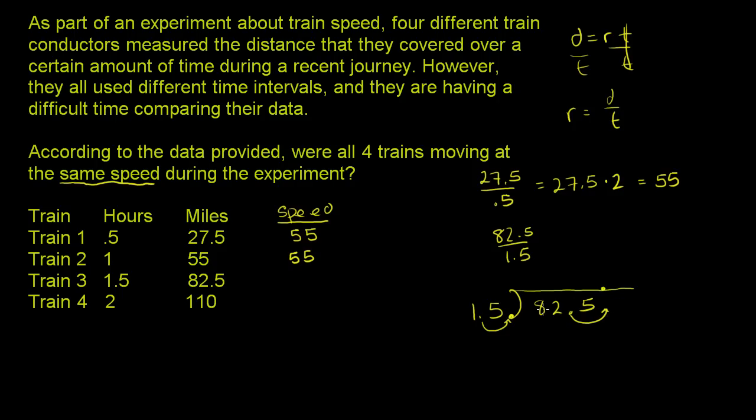5 times 5 is 25, carry the 2. 5 times 1 is 5 plus 2 is 7. Subtract 75. 82 minus 75 is just 7, and then you bring down this 5. 15 goes into 75 five times exactly. 5 times 15 is 75. Subtract, no remainder. So 82.5 miles in an hour and a half is also 55 miles per hour.